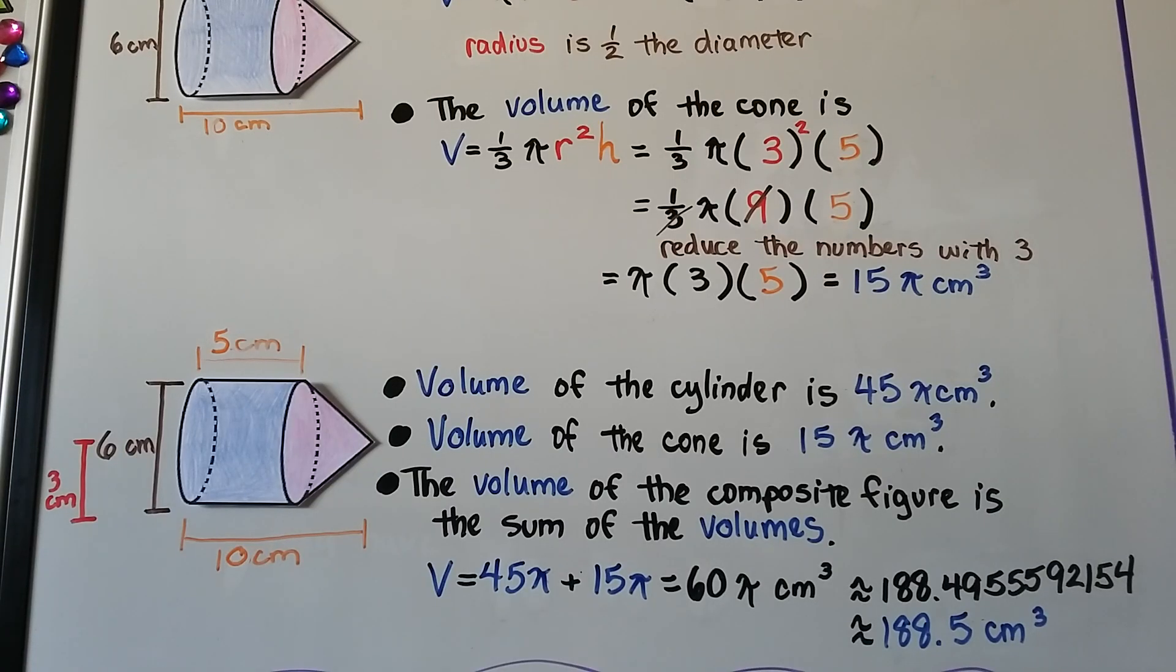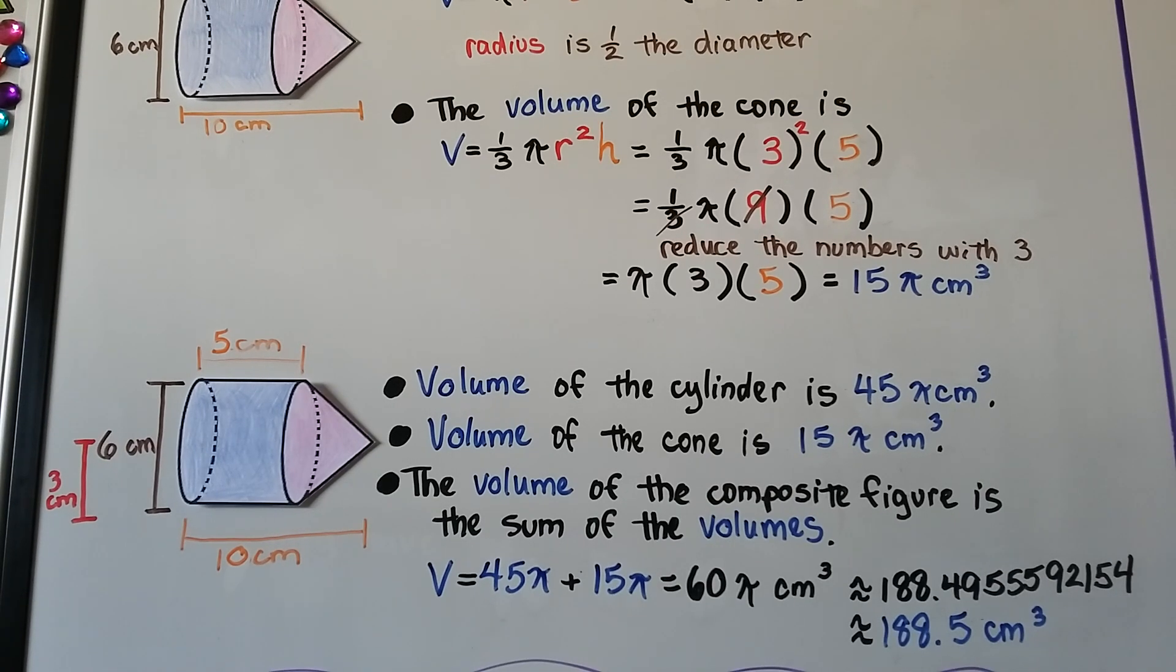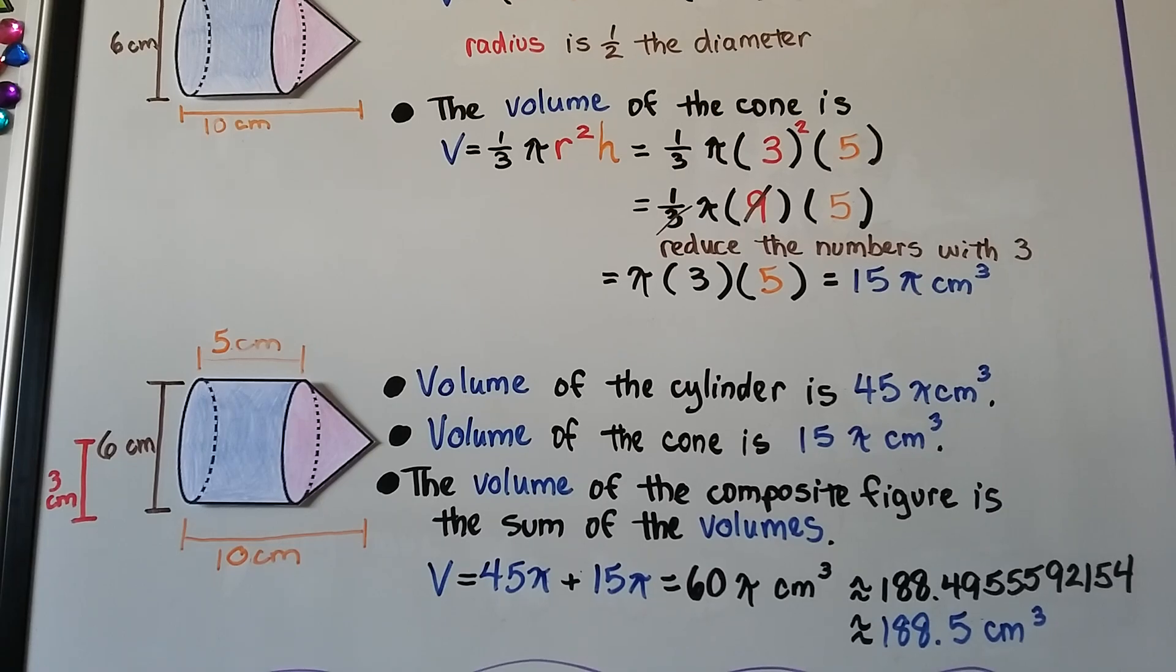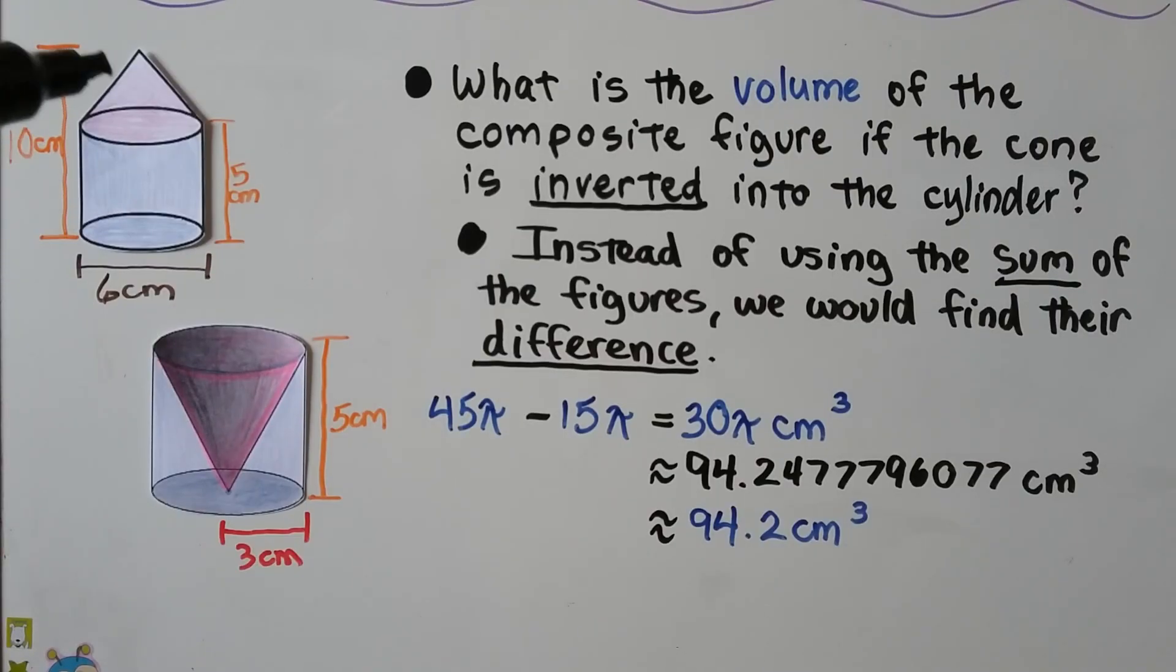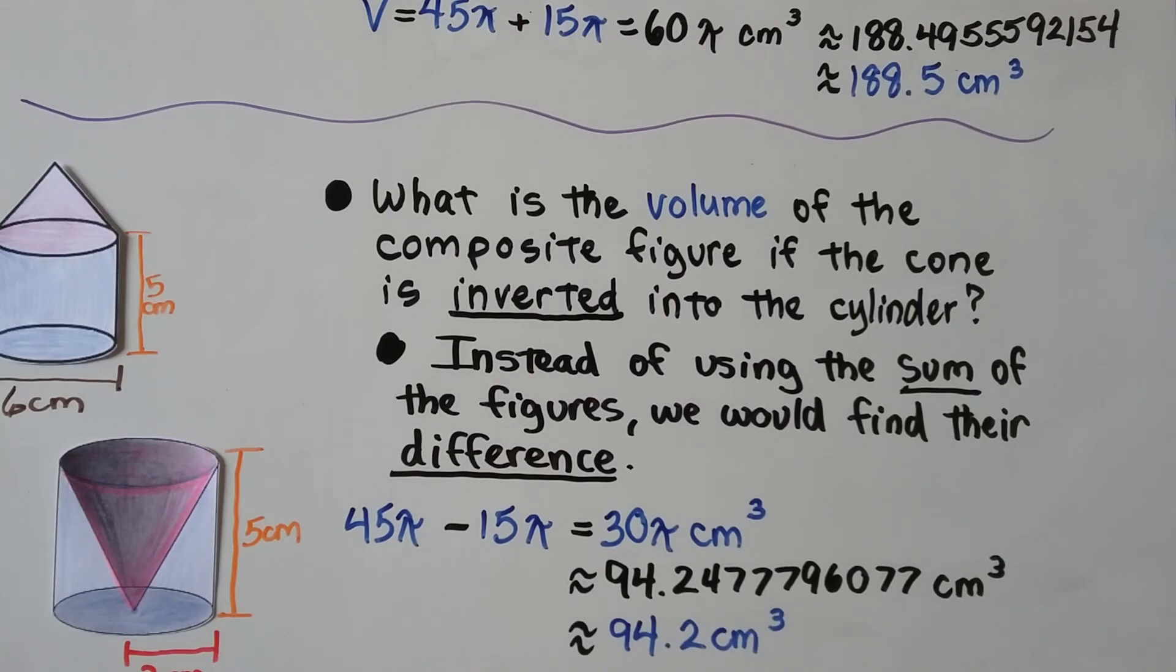We found the volume of the cylinder is 45π centimeters cubed, and the volume of the cone is 15π centimeters cubed, and the volume of the composite figure is the sum of the volumes. It would be 45π plus 15π, which gives us 60π centimeters cubed, which on our calculators is approximately 188.5 centimeters cubed. So we had a cylinder with a cone on top, and we found that it was approximately 188.5 centimeters cubed.